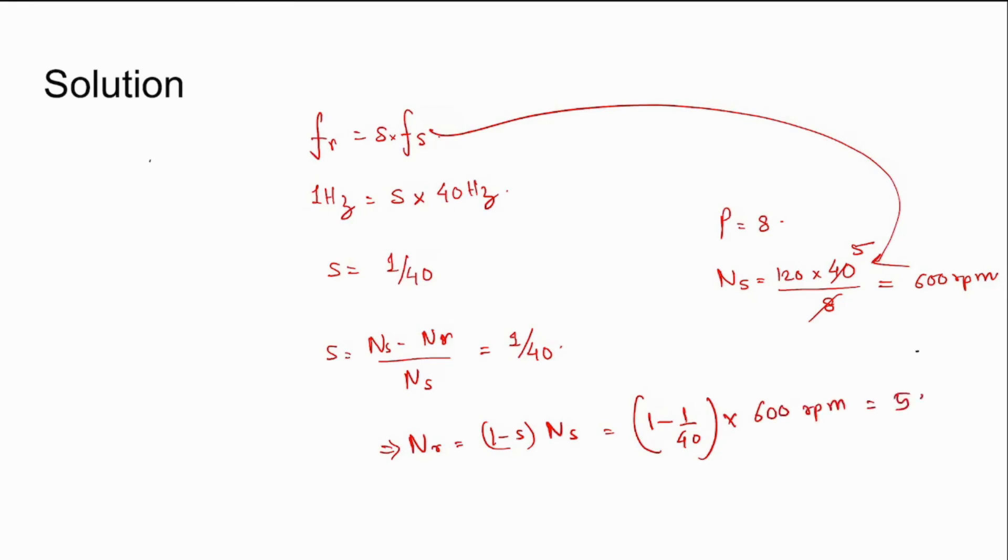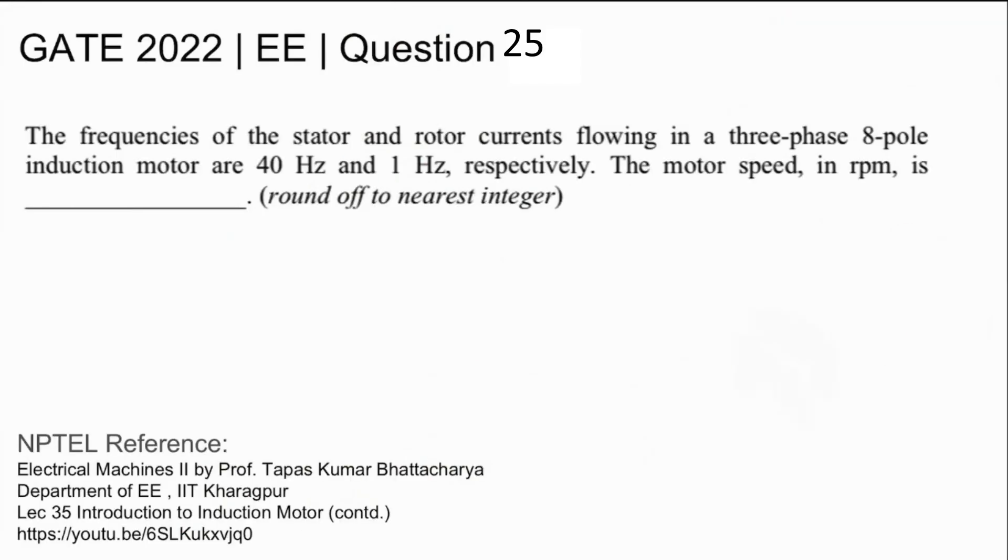Nr is coming out as 585 rpm. So the motor speed, actually the rotor speed in rpm, is 585. This is the answer. Thank you.